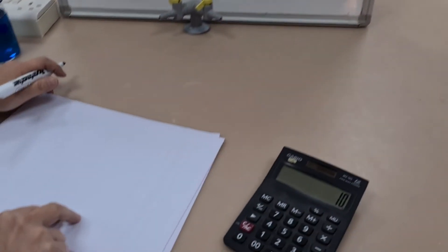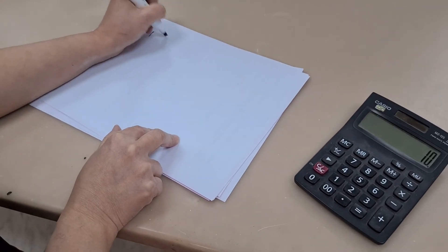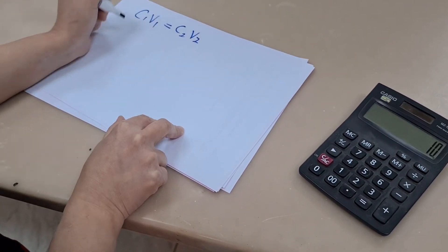To make a 0.6 molar solution from a 0.8 molar, we do the same calculation again.